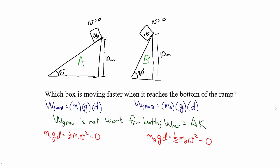The reason I wrote both of these in terms of the mass without plugging in is to show that the mass actually divides out. In the first case, m1 divides out. In the second case, m2 divides out. So in both cases, if we solve for the speed, we get that the speed equals the square root of 2 times g times d.